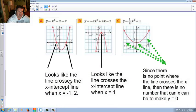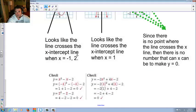Now, here we notice it looks like the line crosses the x-intercept where the line is negative 1 and 2. We talked about that, x equals 1. And since there is no point to cross the x-line, there is no number that x can be to make y equals 0. And we checked it, so you already know.